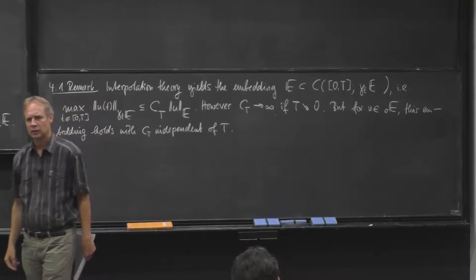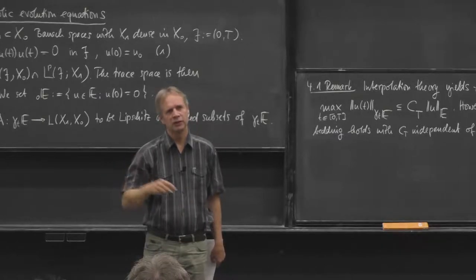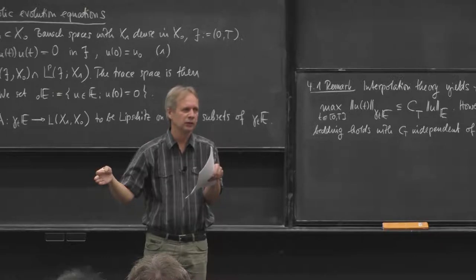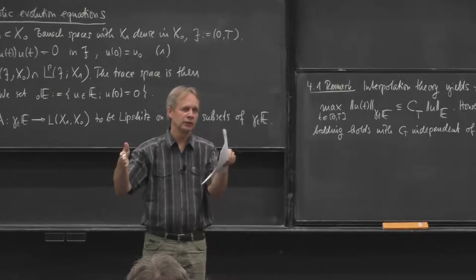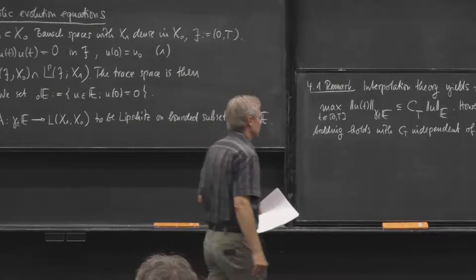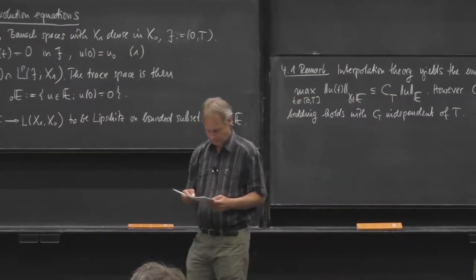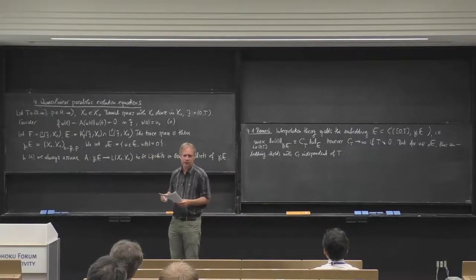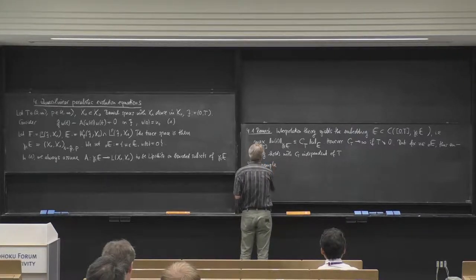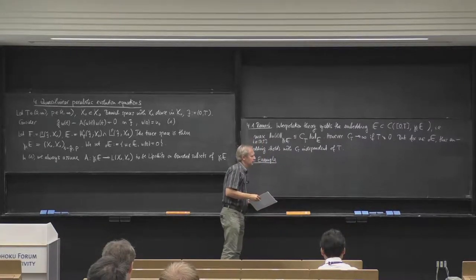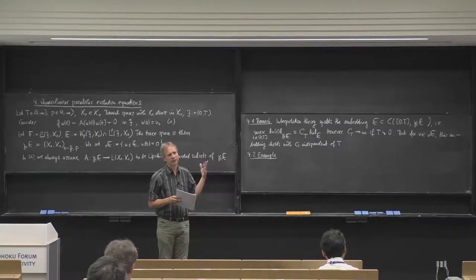But if u has the additional property that u(0) = 0 — so u ∈ E_0 — then this constant can be chosen uniformly in T, independent of T. The reason is simple: if u(0) = 0, I can extend it by zero without changing the regularity, and always consider an interval of length one, taking the constant C_1. This will be needed later because we want uniform estimates as T becomes small.